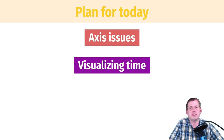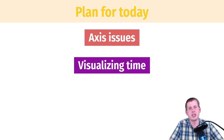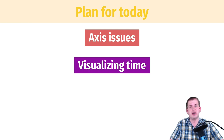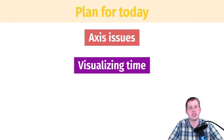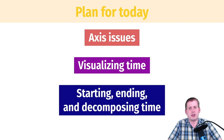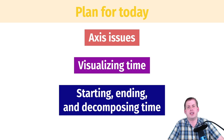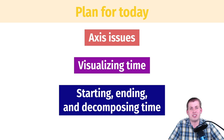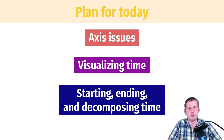Then we'll talk about some different ways of visualizing time. There's no one perfect way — basically you can throw any geom you want at time and it'll visualize it somehow, so there's no universal approach. And then we'll talk about some other issues we have with time, specifically dealing with how we start and end our stories, and things to look out for when you're telling your stories, like seasonality and other issues that will pop up. So let's go ahead and get started.